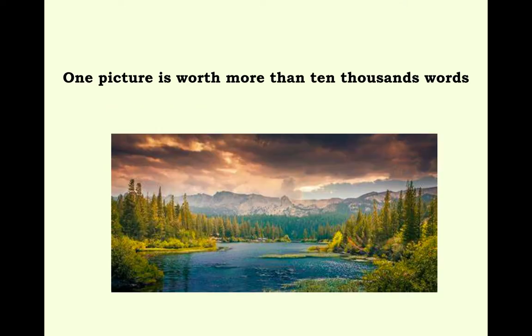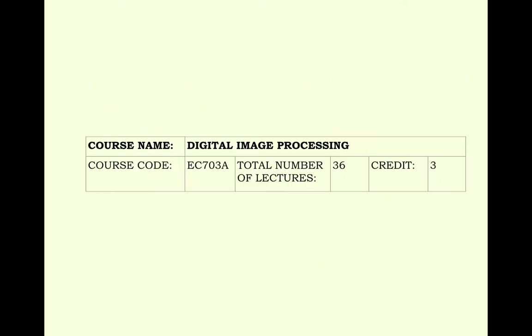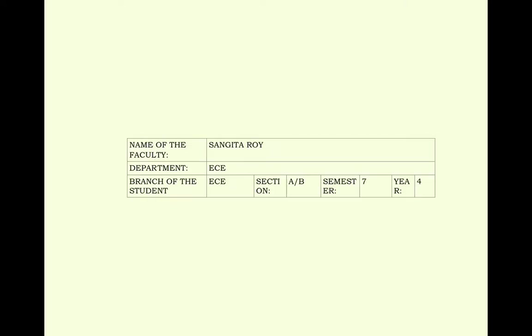We are presenting the course outline of Digital Image Processing. Course Name: Digital Image Processing, Course Code: EC 703A, Total Number of Lectures: 36, Credit: 3.